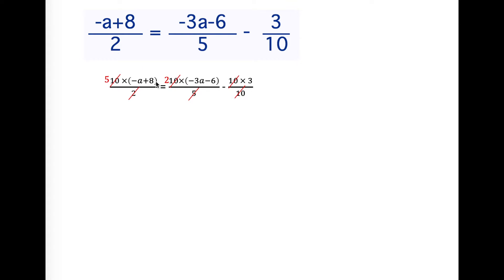We have 5 times (-a+8) gives us -5a plus 5 times 8 is 40. The 2 multiplies -3a giving us -6a. The 2 also multiplies -6 giving us -12. We're left with -3. Add the -3 and the -12 to give us -15.